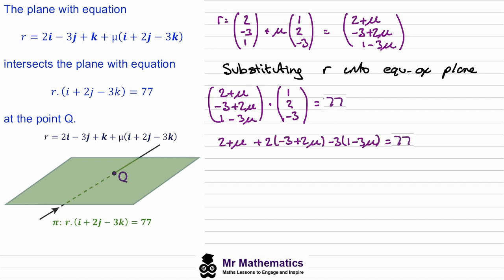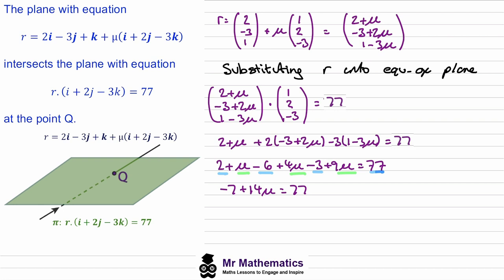At this point we dot the two vectors together to create an equation involving μ, which we know equals 7. Expanding each bracket and collecting constant terms separately from the μ terms, then moving negative 7 to the right-hand side and dividing both sides by 14, we get 14μ equals 84, therefore μ equals 6.